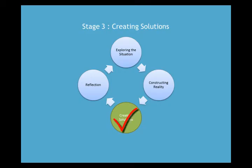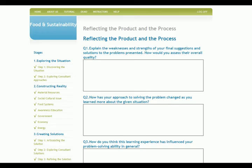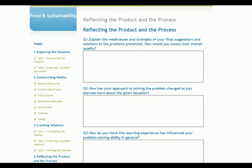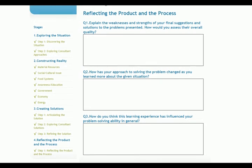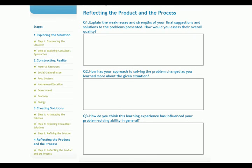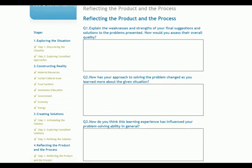The final step of the process is reflection. At this point, students have explored the situation, constructed their reality of the scenario, and created solutions for the central problem. All of this occurred while defining and refining the problem, lessons learned, and solutions based on both their own perspectives and that of various consultants. However, to bring this full circle, the students must reflect on their own journey. They are asked to reflect on the process of problem-solving, including the strengths and weaknesses of their solutions, changes to their approach based on information gathering, and the process's effect on their problem-solving ability.